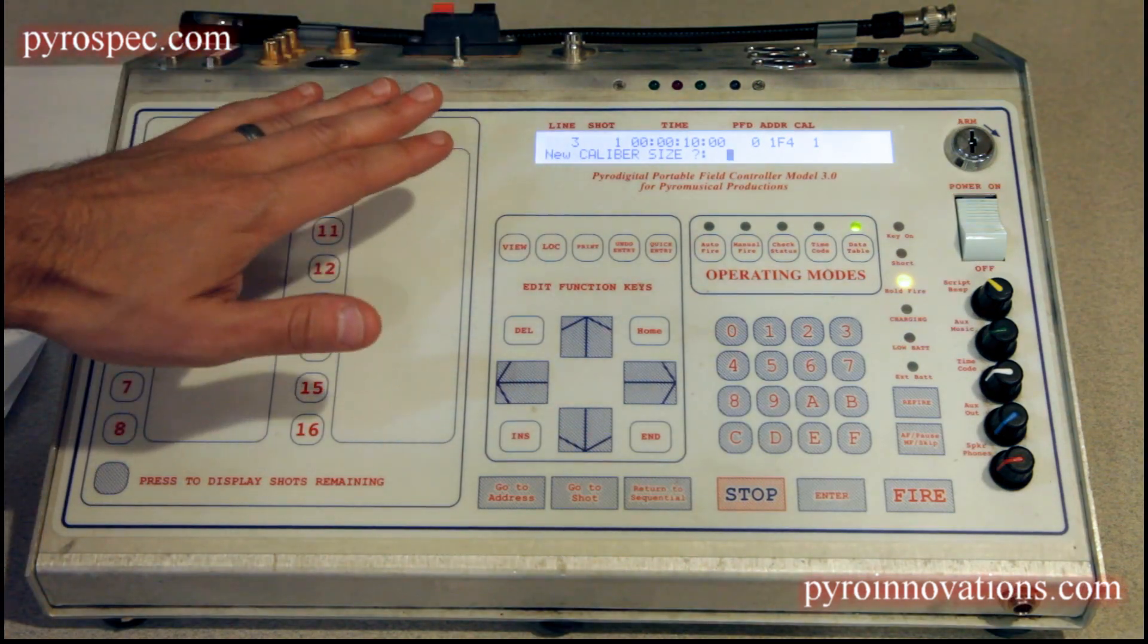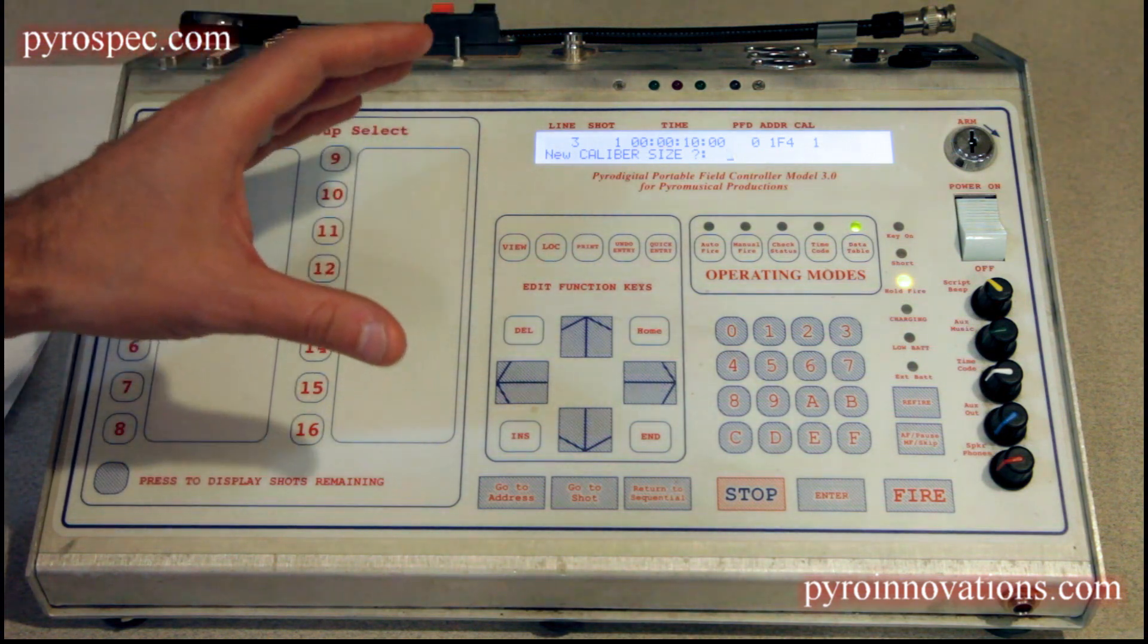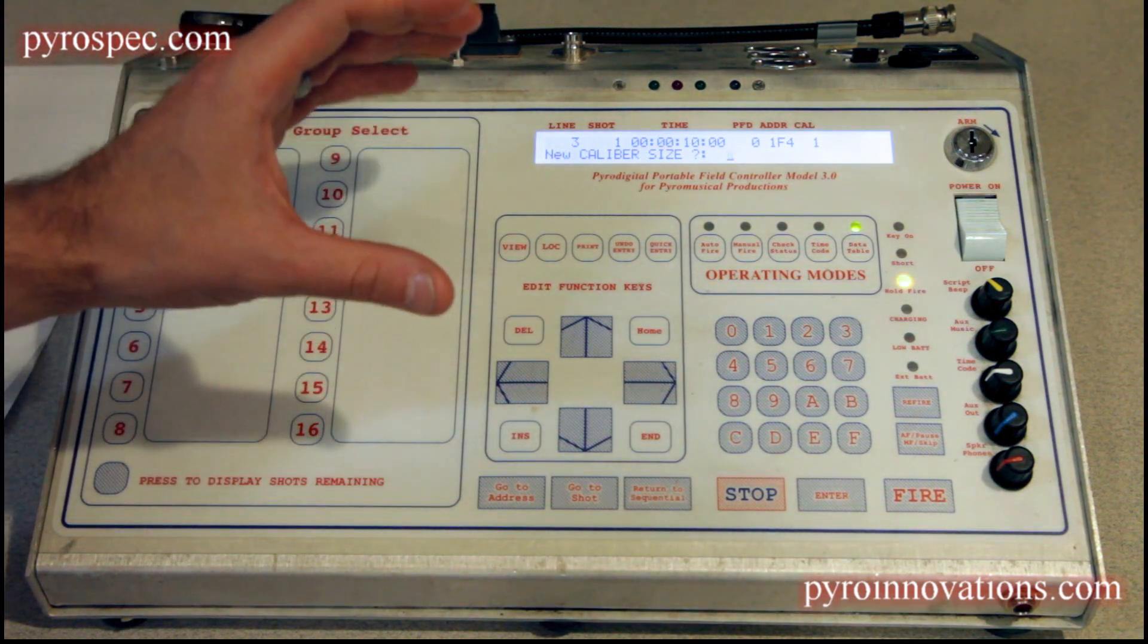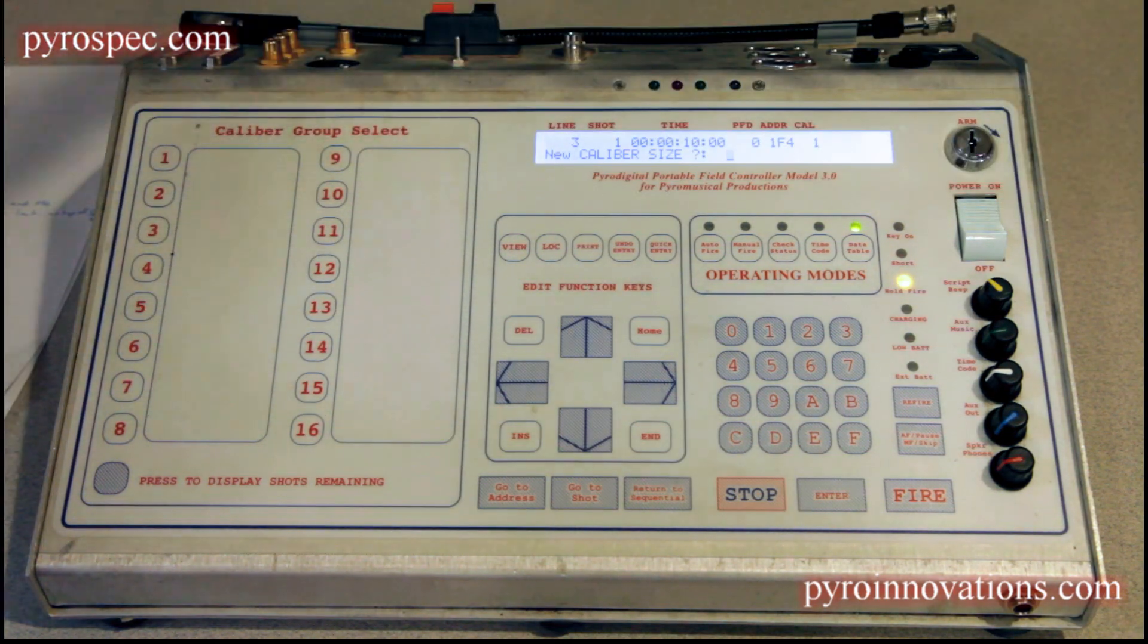When you program a zipper fire mode, you have to keep in mind that you can't program more than 40 different event lines for a particular zipper fire event. In other words, you can fire up to 40 different addresses simultaneously within that one one-hundredth of a second apart from each other, but no more than 40.